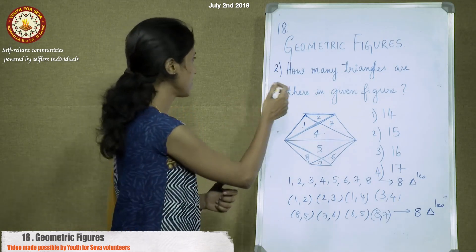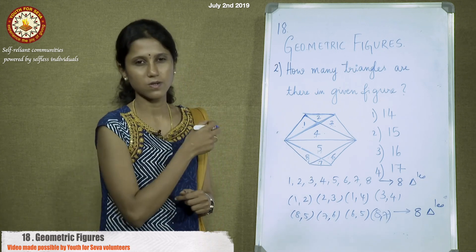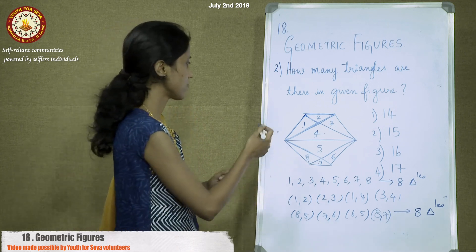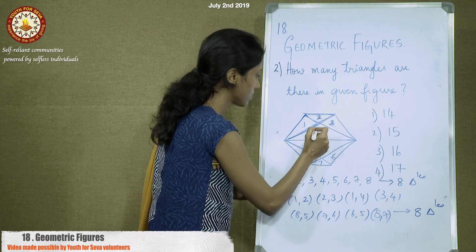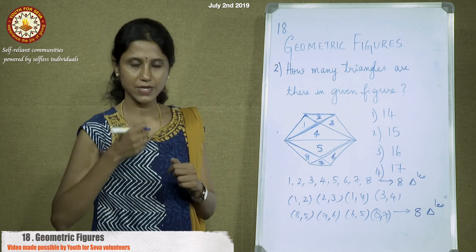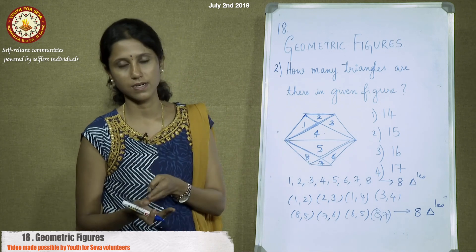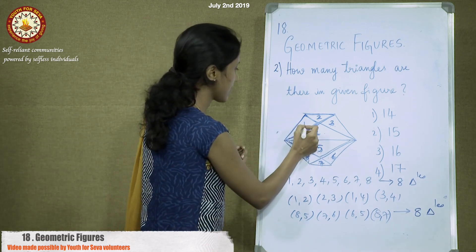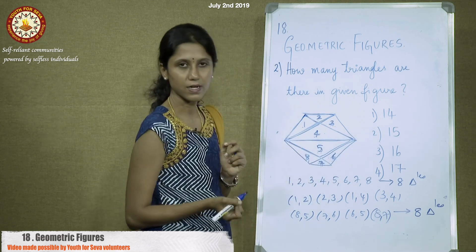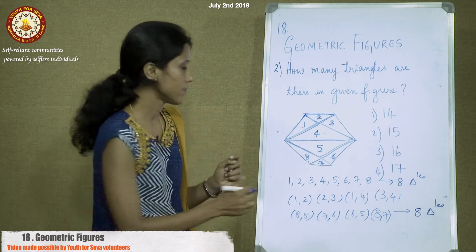Let us move to the second question: how many triangles are there in the given figure? A particular pattern is given and we need to check how many triangles there are. It is not a regular pattern, so we cannot apply the formula — we use the normal technique. Label the segments: 1, 2, 3, 4, 5, 6, 7, 8. Each individual partition — 1, 2, 3, 4, 5, 6, 7, 8 — represents a triangle. In total, 8 triangles from individual segments.